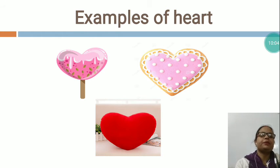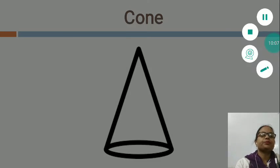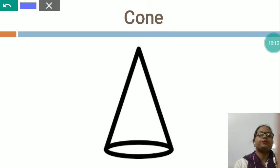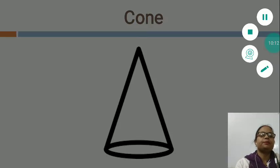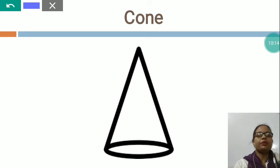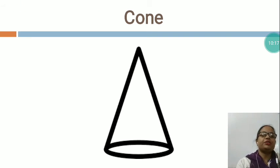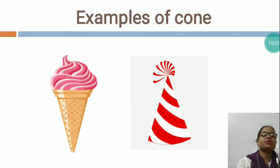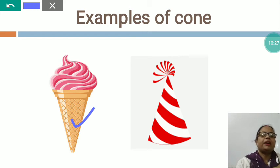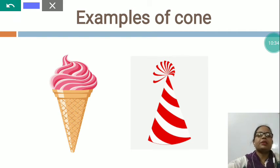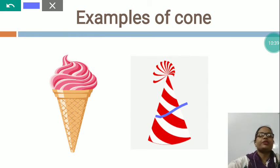Now I would like to teach you another shape. This is CONE. In a cone, there is only one corner. Now I would like to show you some examples of cone. These all are the examples of cone. This is ice cream — have you seen ice cream? Which shape? Cone shape. Now this is a birthday cap — have you seen a birthday cap? Which shape? Cone shape.